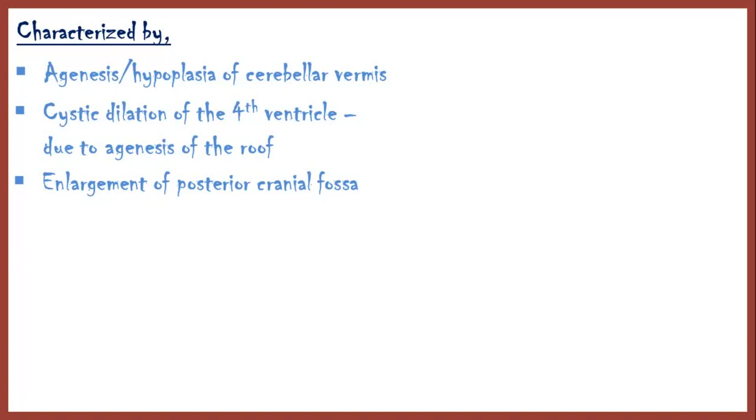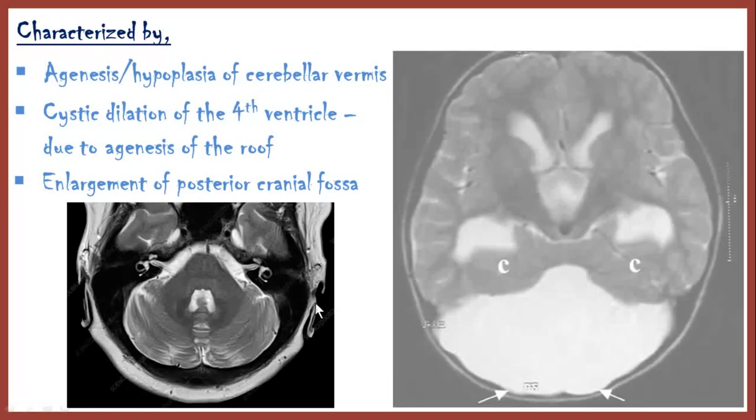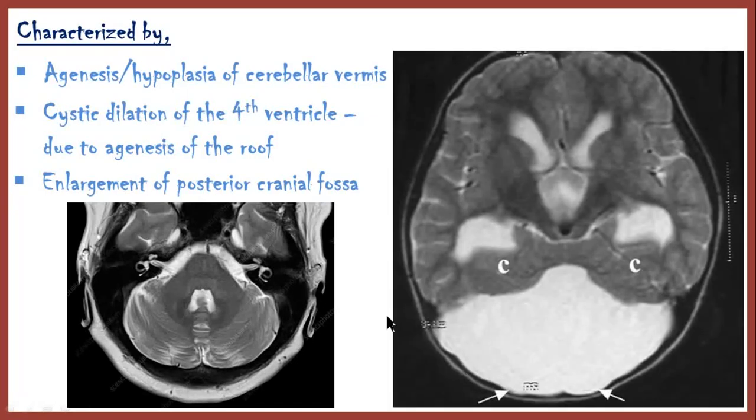This is an MRI image of a normal cerebellum lying on the posterior cranial fossa. And this is an MRI image of a Dandy-Walker patient's brain. Here you can see the posterior cranial fossa is filled with a large cerebrospinal fluid cyst, and the poorly developed cerebellar hemispheres are represented by the letter C.